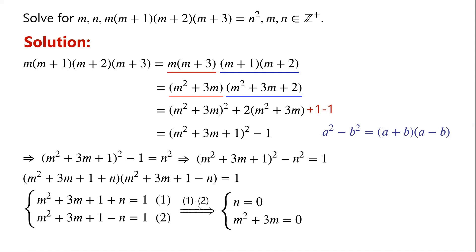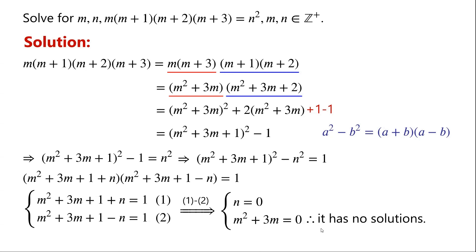Taking equation 1 minus equation 2, we have 2n equals 0, so n equals 0. By substituting n equals 0 into equation 1, we get m squared plus 3m equals 0. These equations have no positive integer solutions, so the original equation has no solutions.